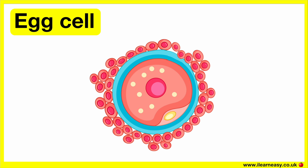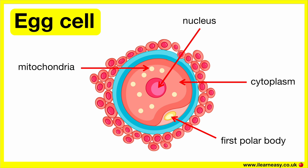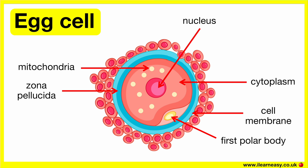The egg cell is adapted to its function. The parts of an egg cell are: nucleus, cytoplasm, mitochondria, first polar body, zona pellucida, cell membrane, and follicle cells. All of these parts aid its function.